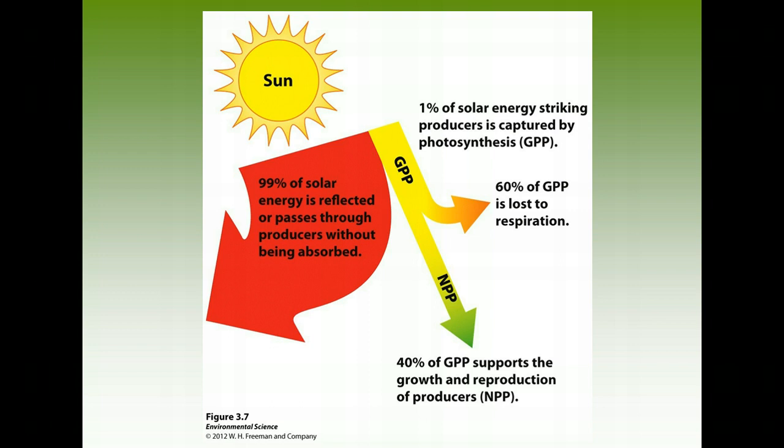Producers typically capture only about 1% of the solar energy coming in via photosynthesis. Of that GPP, about 60% is lost to respiration and only 40% is used for growth and reproduction.